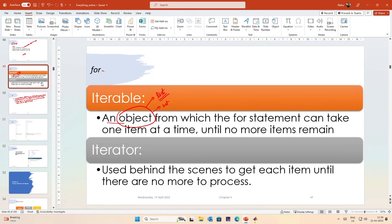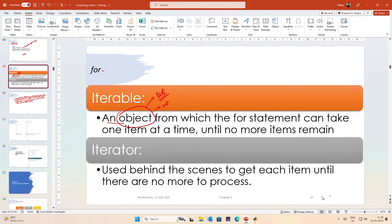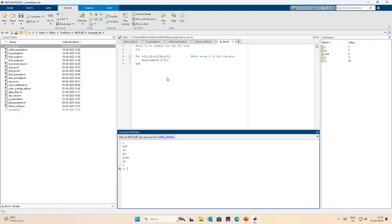Last time we had started discussing the for loop when we ran out of time. We had touched upon the idea of the for loop, the idea of iterables and the iterator, and how the for loop takes one element from the iterable at a time, assigns it to the iterator, and then moves on to the next element. You might be familiar with the for loop in C or C++. Here we have looked at a slightly different version, and as an example of an iterable I created a list i and iterated through it one by one.